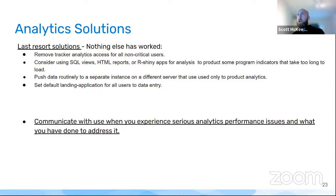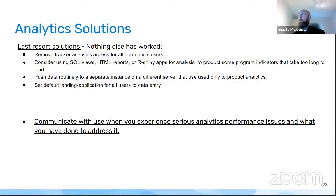Another option — this is brand new and not fully vetted yet — is setting up a separate DHIS2 instance on a separate server that will routinely pull data from your production instance, using that separate instance just to produce your analytics. We have seen some fairly dramatic performance improvements with a dedicated server for just analytics. However, this is not something to play around with if you don't have the technical expertise and expert server managers. As an absolute last resort, you can also set your default landing application for all users to something that's not analytics, like data entry or the capture app, so they have to physically click over to analytics.